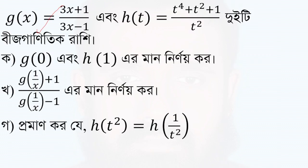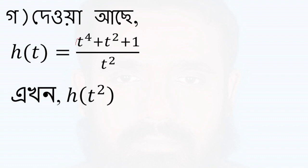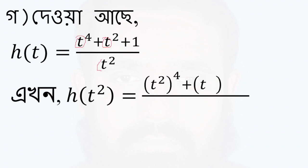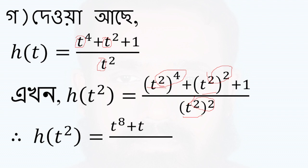Now, s(t²) is equal to s(1/t²). Given s(t) = (t⁴ + t² + 1)/t², substituting t² in place of t gives s(t²) = (t⁸ + t⁴ + 1)/t⁴.